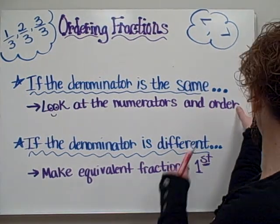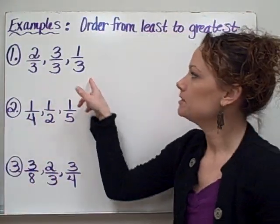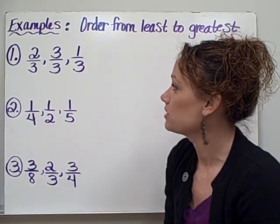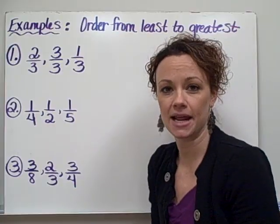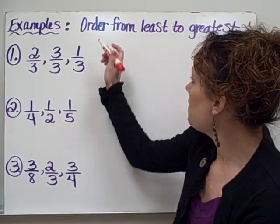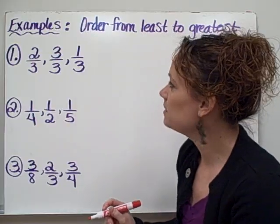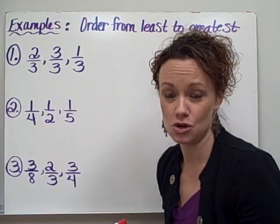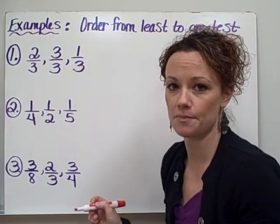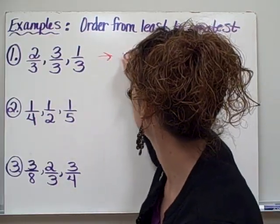So let's take a look at some examples. Example number one, we have 2/3, 3/3, and 1/3. What you notice about these fractions is they all have the same denominator, so we're only going to be focused on the numerator. My problem tells me to order the fractions from least to greatest, so I need to be looking for the smallest numerator that I see. So out of 2, 3, and 1, the smallest number would be the 1, which makes 1/3 the smallest fraction.